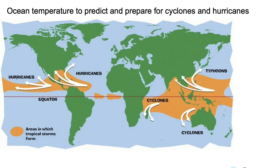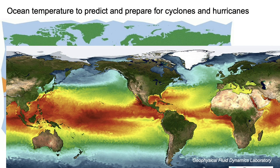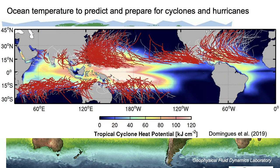Ocean temperature can also be used to predict cyclones and hurricanes. This map shows the alleyways where typhoons, cyclones, and hurricanes are likely to occur — along the tropics where ocean water is warmer. The Gulf of Mexico and the Indian Ocean, for instance, are places where we see a lot of tropical storms because of very warm water. If we can predict these temperatures in advance, we'll have a better idea of where cyclones will occur and what their intensity will be. That's exactly why we need ocean temperature data — so we can help people be prepared for future cyclones, hurricanes, and typhoons.